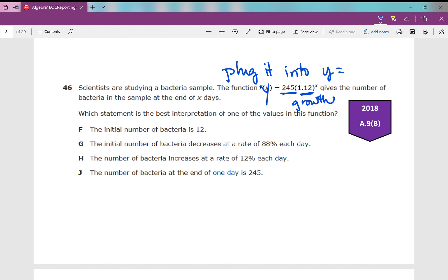Which statement is the best interpretation? The initial number of bacteria is 12. No. The initial amount is 245. The initial number of bacteria decreases at a rate of 88% each day. No, this is actually showing growth, so it's not going to decrease.